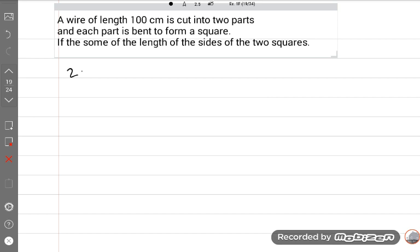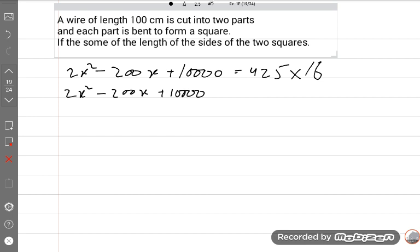2x square minus 200x plus 10,000 is equal to 425 multiply by 16, because 16 will move to the other side. So 2x square minus 200x plus 10,000 equals 6,800. 2x square minus 200x plus 3,200 equals zero.